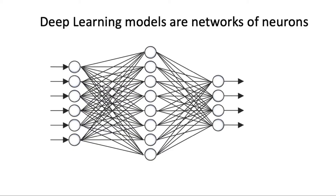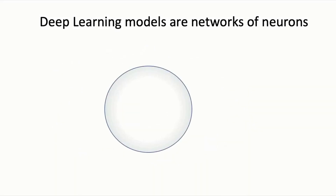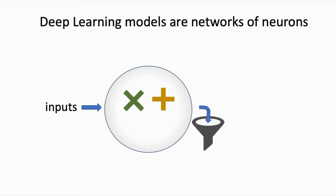Deep learning is a type of AI that does computations using neural networks. A neural network is a model that's built on individual computing units, also known as neurons. Each neuron applies very simple computations to its inputs, involving just multiplying, adding, and passing sums through simple filters.